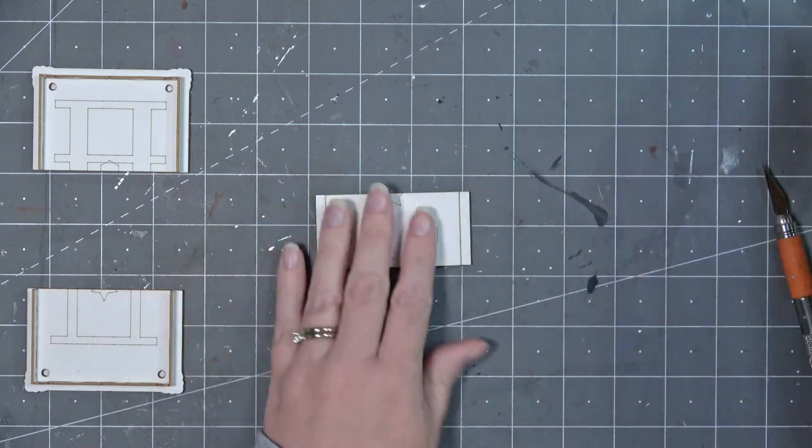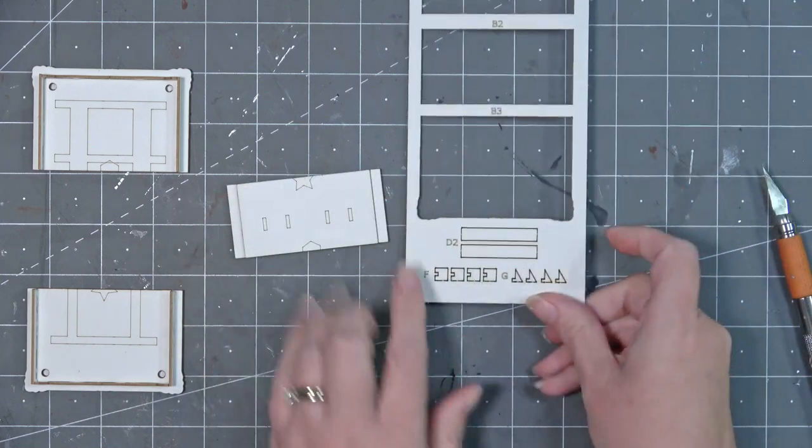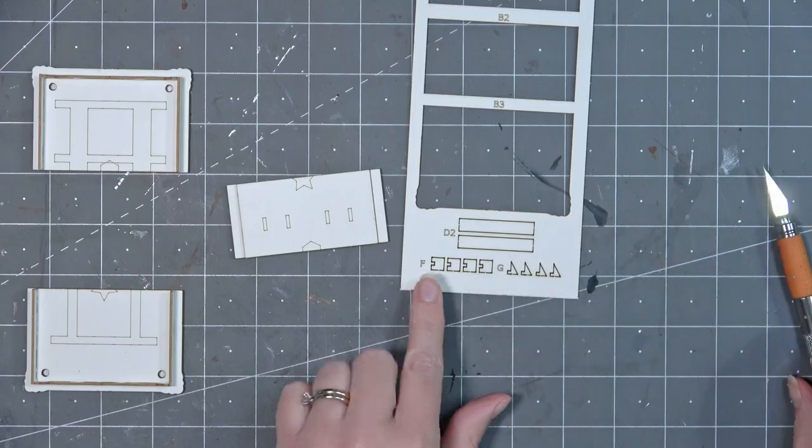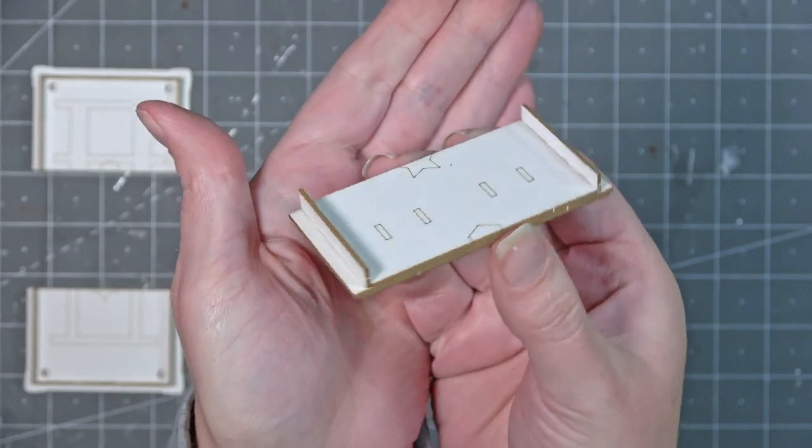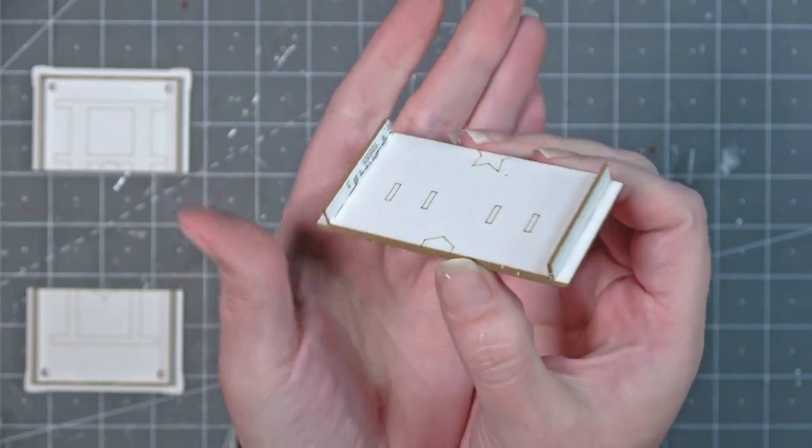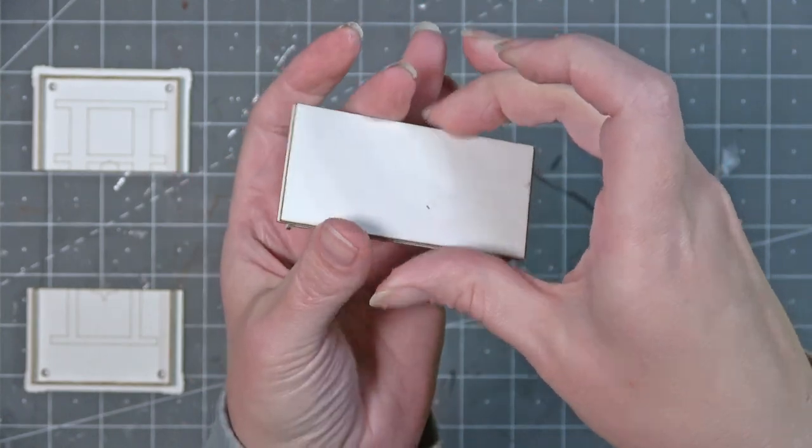To work on the center piece that is going to be the removable leaf you're going to use two pieces marked D2. Cut those out and add them to either side just like we have been doing and this is what it will end up looking like.